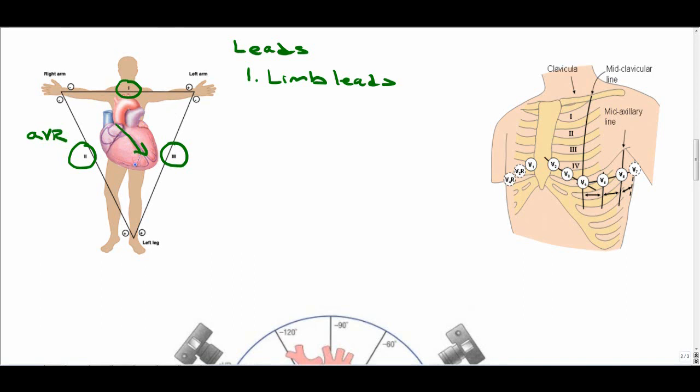AVL checks any voltage that's going towards the left side of the patient. So it's positive towards the left and negative towards the right. AVF looks at voltages going towards the feet of the patient. It is positive towards the patient's foot and negative towards the patient's head. So any positive deflection going towards the patient's foot in AVF will appear as a positive deflection.